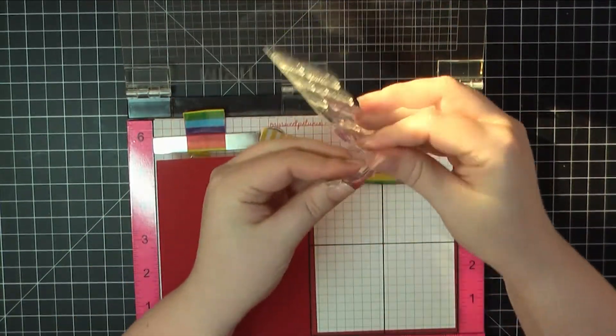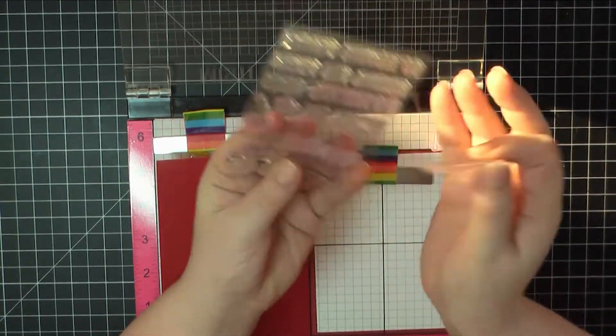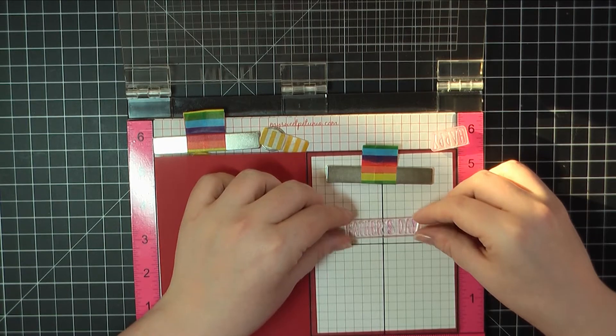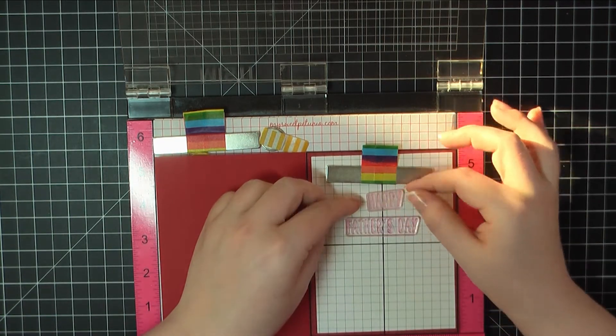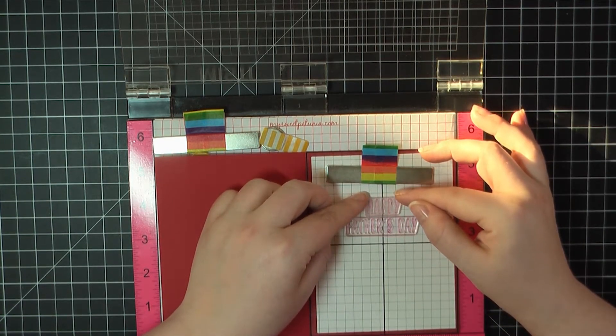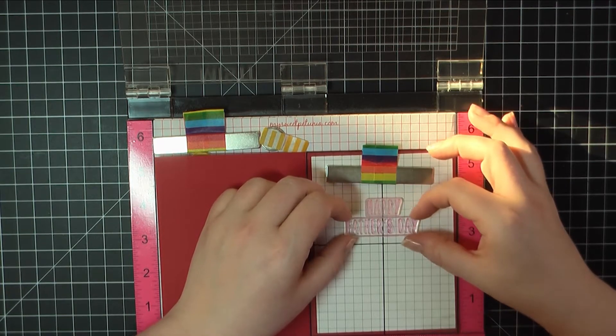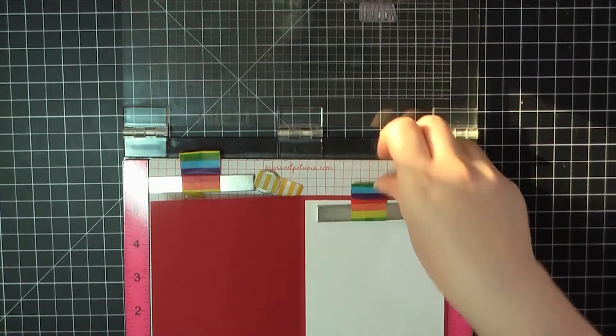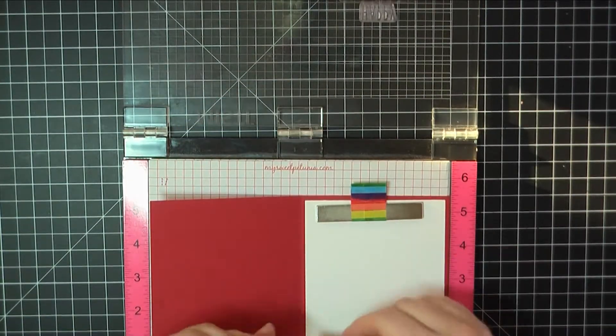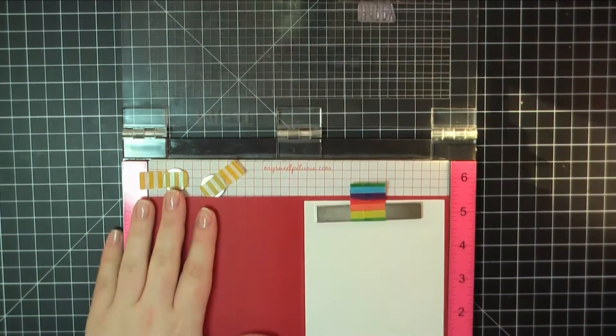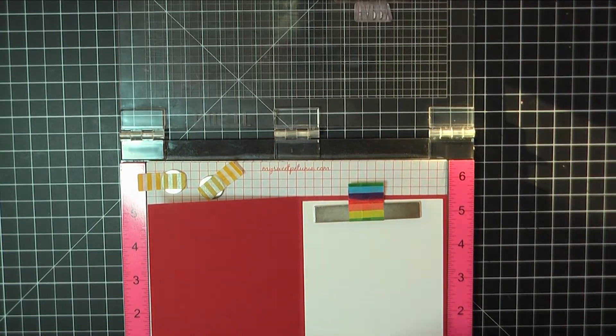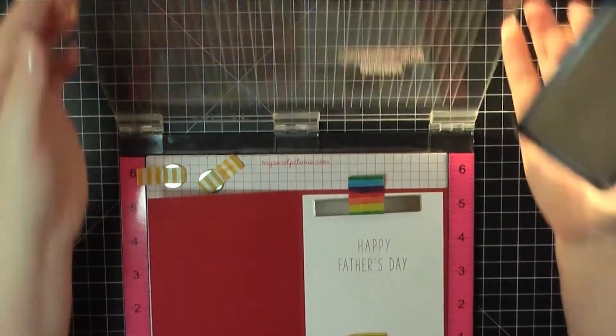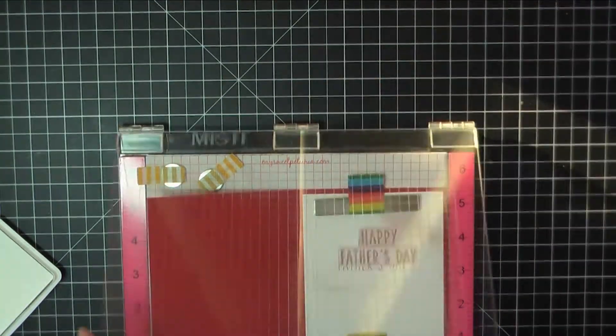Next, I'm going to stamp my sentiment on the inside of the card. I have gone ahead and added a panel of Neenah Solar White and this is trimmed down to 4 by 5.25. And this stamp set I'm using for Happy Father's Day, it originally came in a paper pumpkin kit, which you can get from Stampin' Up! It's a monthly kit that they send out. And this was from May 2016. So I'm not sure if you can find this stamp set anymore. It might have just been a single release with that card kit. But if I can find a link, I will post it for you.